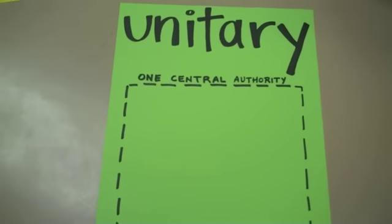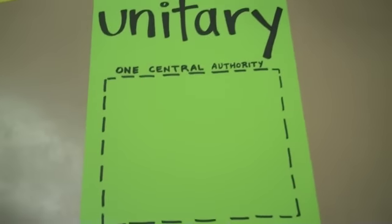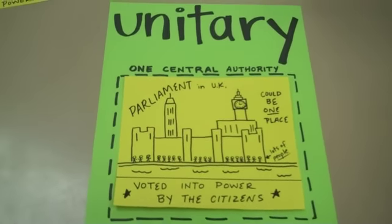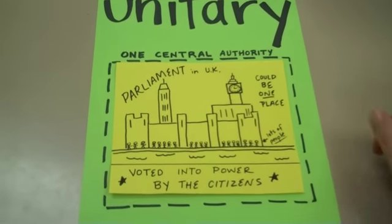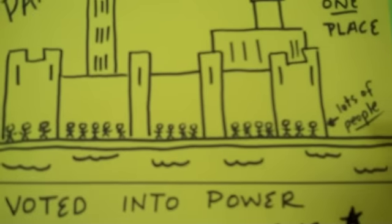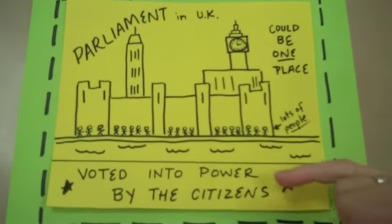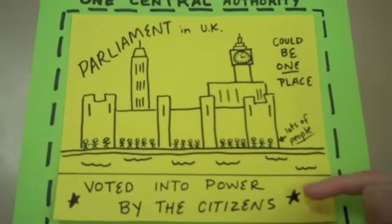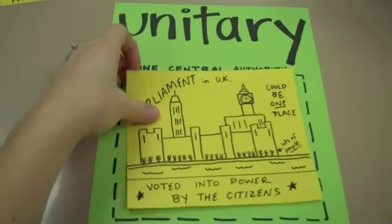Unitary governments have one central authority. A unitary government could be one place, like the Parliament building in the UK. There are lots of people in Parliament — they represent the people and are the ones that make the rules and laws in the UK. They were all voted into power by the citizens, so they could be voted out of power in the next election. That is one type of unitary.